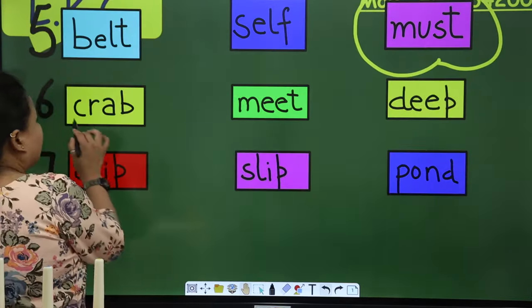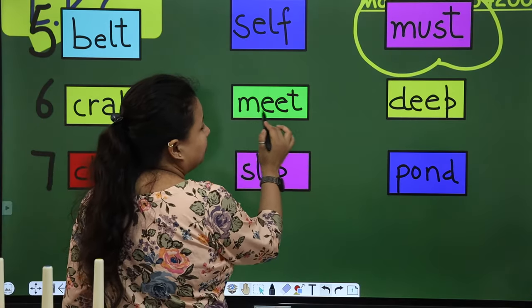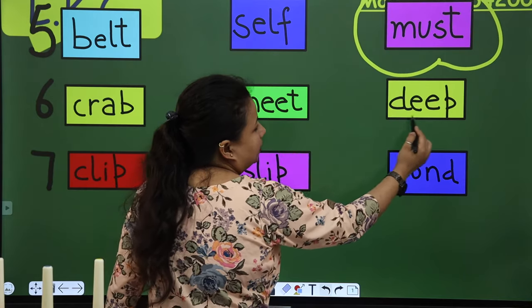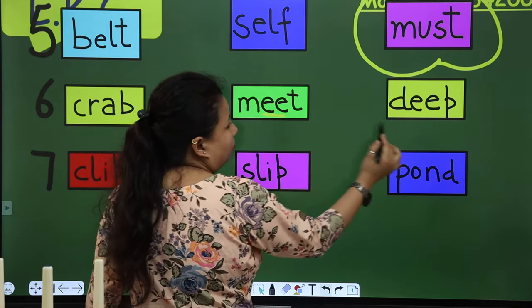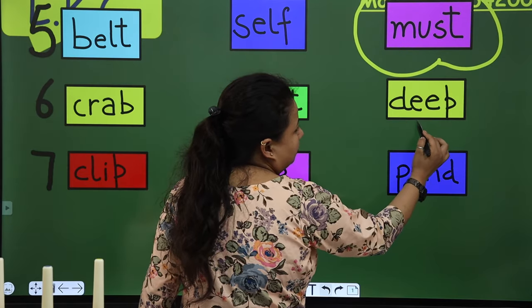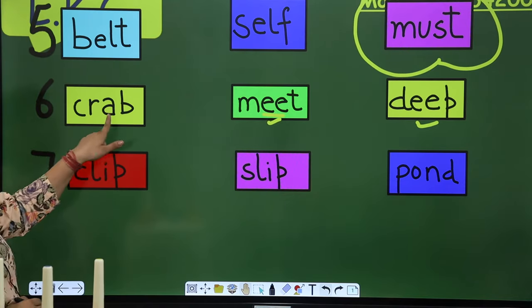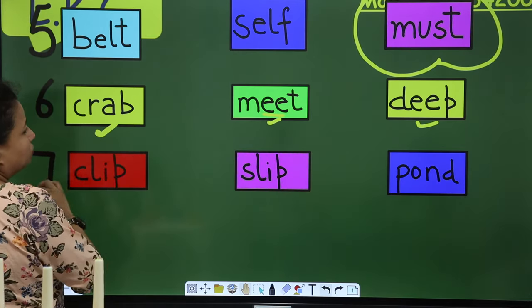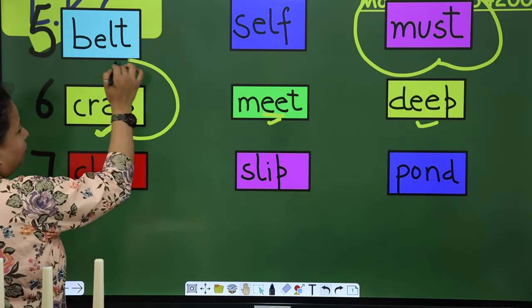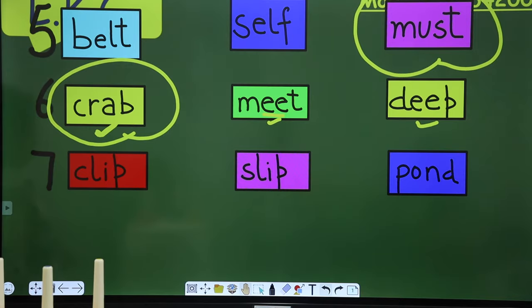Next is crab, crab. This is neat and this is deep. So both have same sound. And both have same letters. But this is crab. The sound A has come. So this is the odd one. Now we have to make a circle on it. Is that okay?